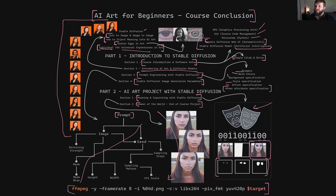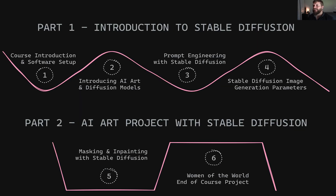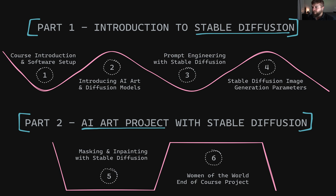So let's talk about what we will be learning in this course. This course will cover everything you need to get up and running with Stable Diffusion. You'll be able to generate your very first image using AI in the very first lesson. The course is divided into two parts. Part one is titled Introduction to Stable Diffusion, where we'll introduce Stable Diffusion and learn how to use it. We'll start with the course introduction and software setup, then move on to introducing AI art and touching on diffusion models — the current models making AI art possible at this level.